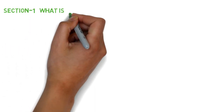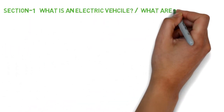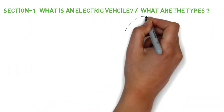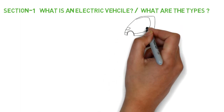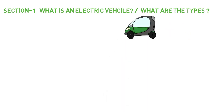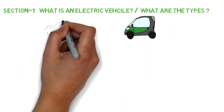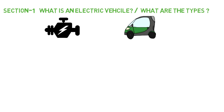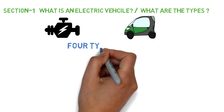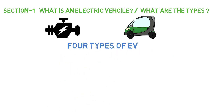What we will learn: what are electric cars and what are the different types? By definition, an electric car is a vehicle that is propelled by one or more electric motors. There are at least four different types of electric cars. Let's have a look at what they are.